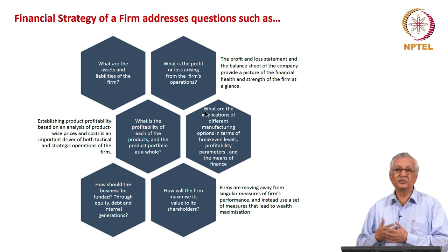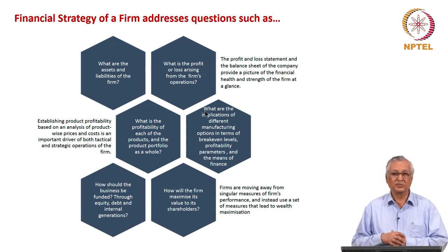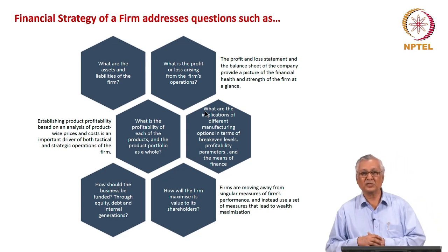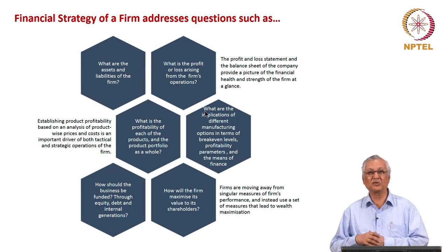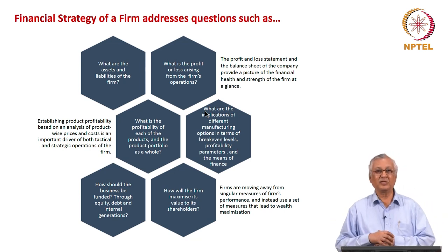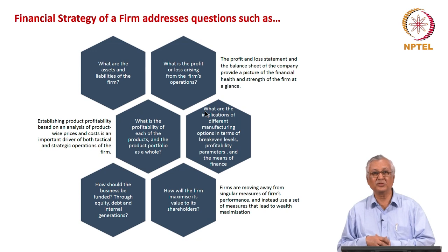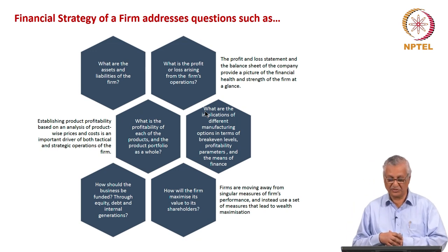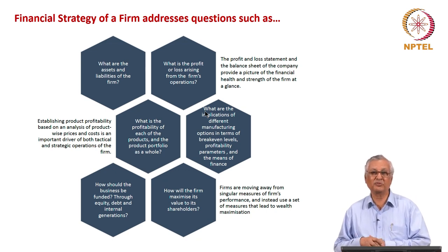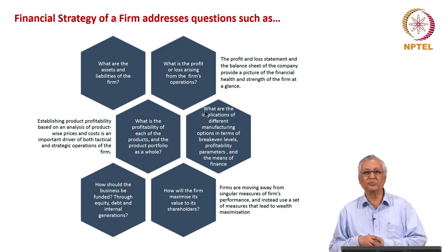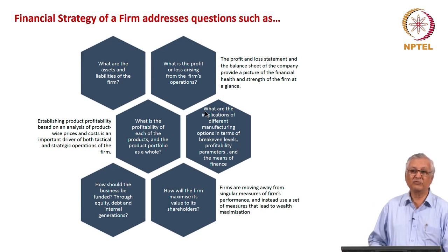The financial strategy should also understand the implications of adopting a particular type of operation strategy. Should I have decentralized production or centralized production? Should I have production which is fully integrated, quasi-integrated, or completely non-integrated? What are the implications of different types of manufacturing and operational options? And how should I fund my business — through equity, or a mix? How will the firm maximize its value to the shareholders? What are the singular measures of firm performance and which performance measure would be more appropriate for which type of industry? These are some of the basic questions which the financial strategy of a firm tries to address.